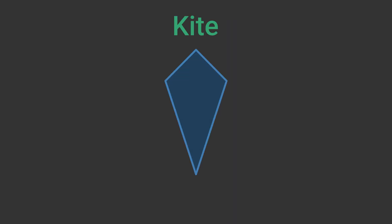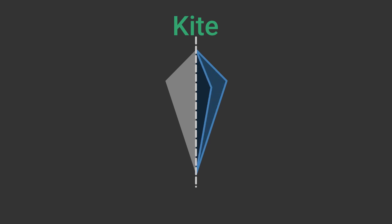The two pairs of adjacent sides of a kite have equal length. This makes it symmetric along one of its diagonals, so it has one line of symmetry.